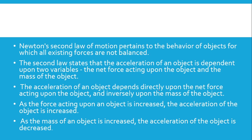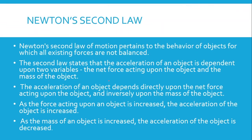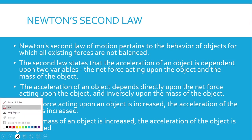Newton's second law of motion pertains to the behavior of objects for which all existing forces are not balanced. The second law states that the acceleration of an object is dependent upon two variables: the net force acting upon the object and the mass of the object. Newton's second law only applies when the resultant force R is not equal to zero — that is, when there is some unbalanced external force.